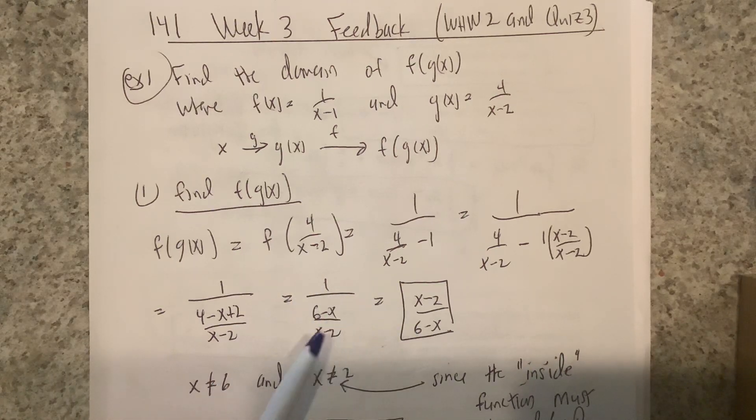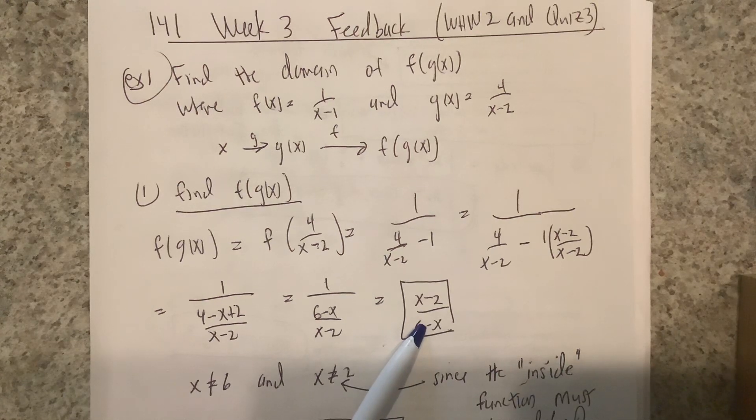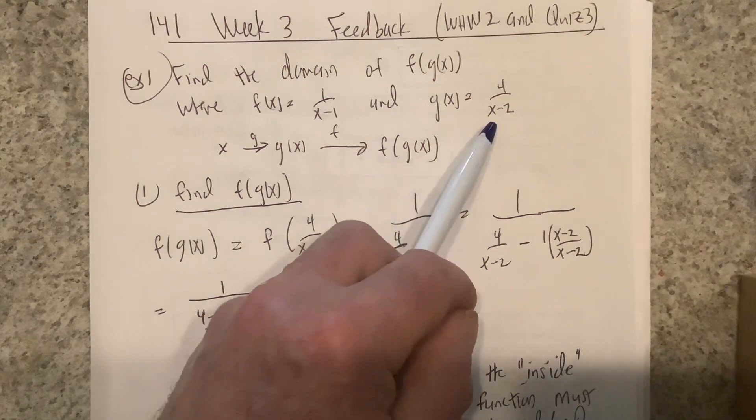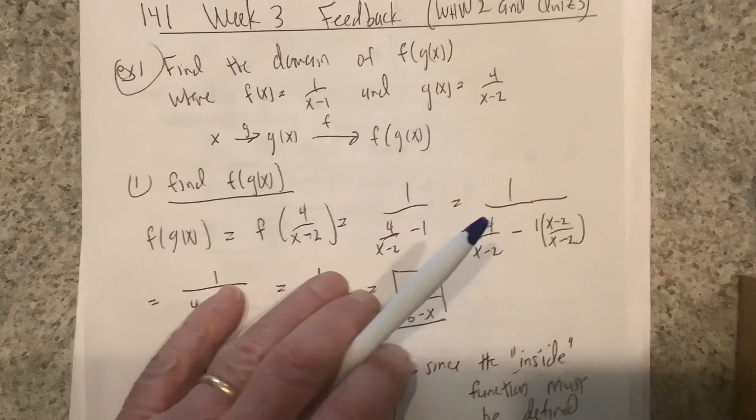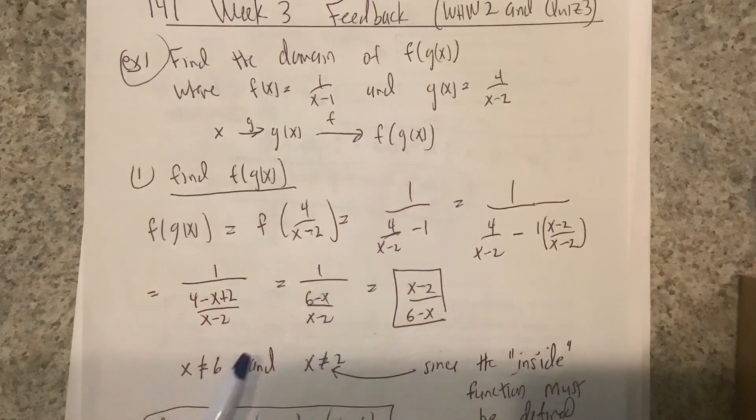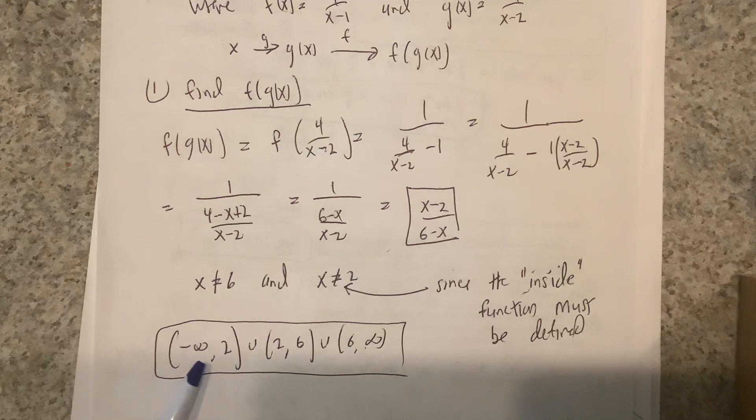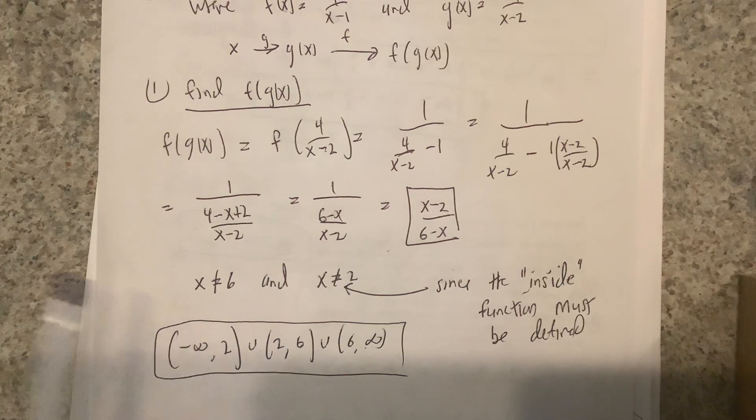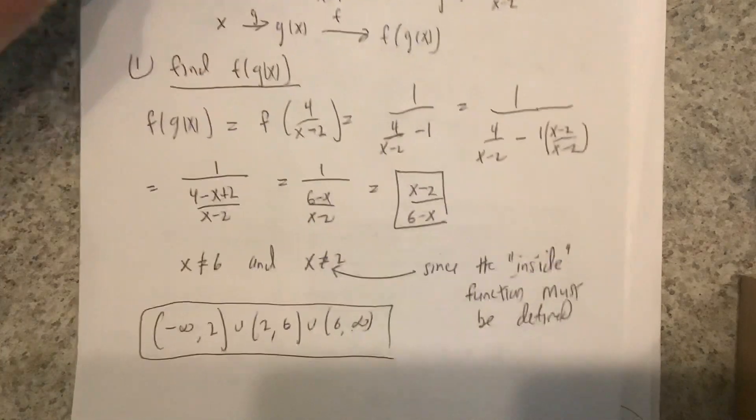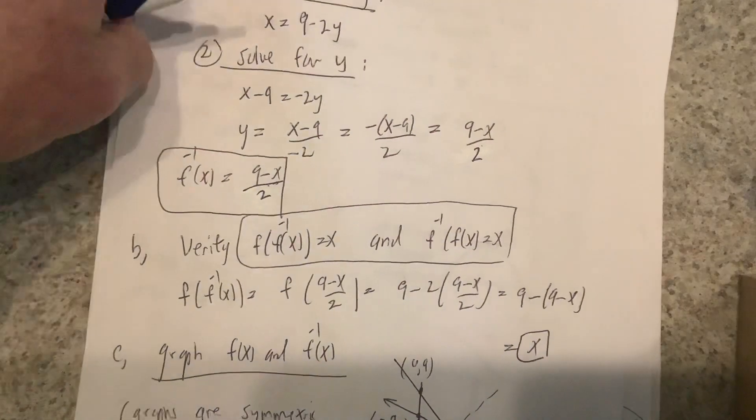You can rule out six right away because when you form the composition, x can't equal six—it makes the bottom zero. But then you have to go back and ask yourself, what about the inside function? The inside function was g(x), so you have to rule out two also. So the way you would write it is negative infinity to two, union two to six, union six to infinity.